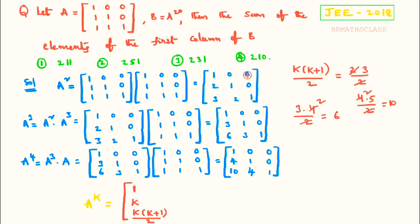For example, you can see 0, 0 appearing consistently — so those elements are 0. You also observe 1, 0 and 1, 0 appearing repeatedly, so here you get 1, 0. For A square, this element is 2; for A cube, 3; for A power 4, 4 — so for A power k, this element is k. And here 1, 1, 1 — so this element is 1. From this I can also find the sum of all elements of the second and third columns of B.